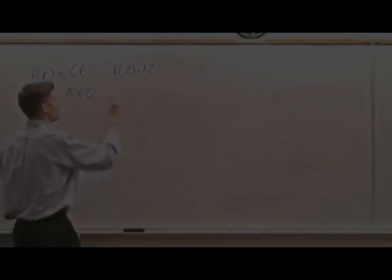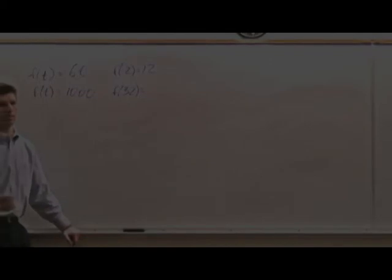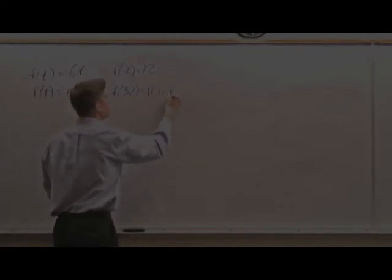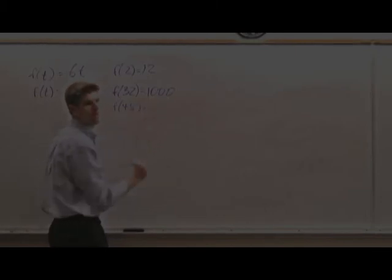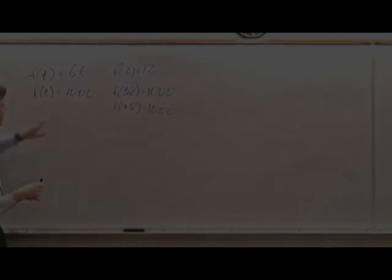In other words, if it's an easy week, and he only works 32 hours, how much does he get paid? $1,000. If it's a really hard week, and he works 48 hours, he gets paid $1,000. So actually, constant functions are incredibly common. Sometimes we just don't bother to write this, but we're thinking about it.